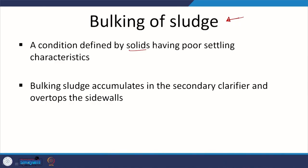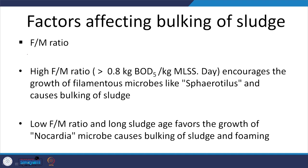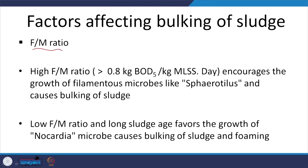Bulking of sludge is characterized by solids having poor settling characteristics; they accumulate in the secondary clarifier and can even overflow the side walls. There seem to be various factors that lead to bulking: it can be filamentous or non-filamentous. High F/M ratio encourages the growth of filamentous microbes like Sphaerotilus and causes bulking. Low F/M ratio and long sludge age favor the growth of Nocardia microbes, causing bulking and importantly foaming.